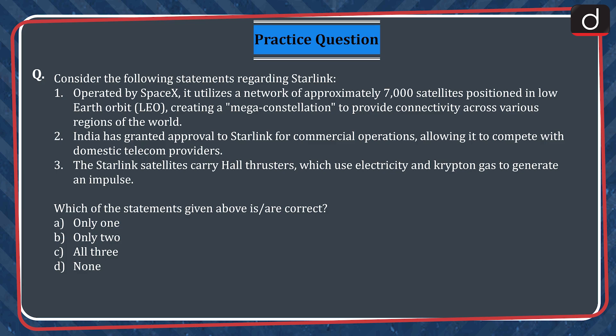Now it is time for a practice question. Consider the following statements regarding Starlink. 1. Operated by SpaceX, it utilizes a network of approximately 7,000 satellites positioned in low-Earth orbit, creating a mega-constellation to provide connectivity across various regions of the world. 2. India has granted approval to Starlink for commercial operations, allowing it to compete with domestic telecom providers. 3. The Starlink satellites carry Hall thrusters, which use electricity and krypton gas to generate an impulse. Which of the following statements is correct? A. Only 1. B. Only 2. C. All 3. D. None. Send us your answer in the comments section. Thanks for watching.